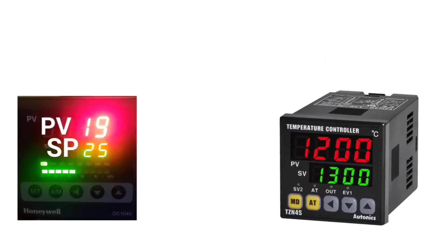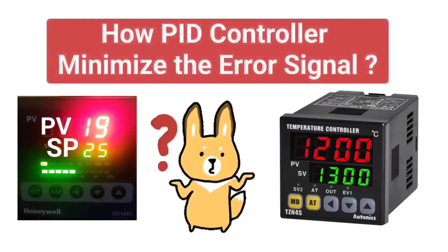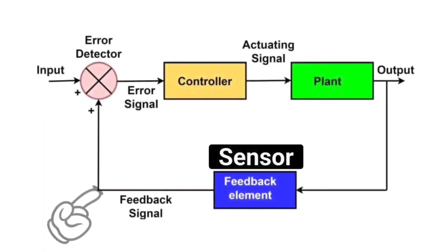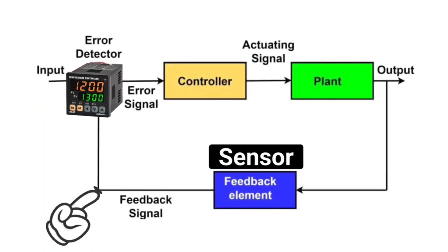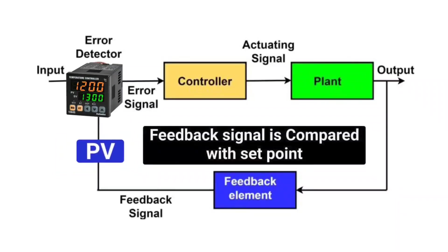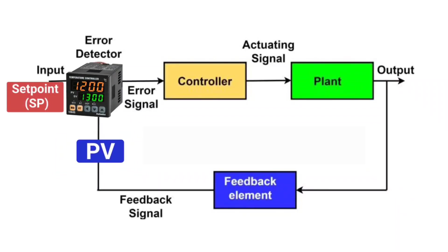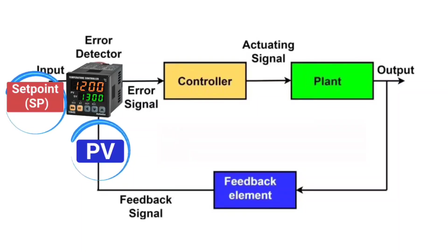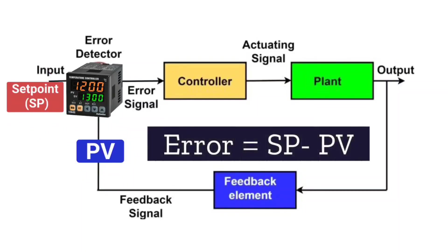Let's discuss how the PID controller reduces the error signal. Signal from sensors is sent to the PID controller. This signal is then compared with a predefined set point. Now, set point and process variable difference is calculated. Here is a formula you should remember: error equals set point minus process variable.